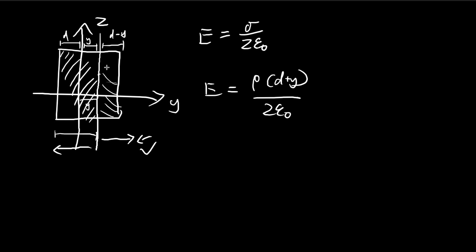Now the electric field from this section is quite similar, but it's in the other direction, right? So we can put a minus. And then again, rho times the thickness, d minus y, divided by 2 epsilon.